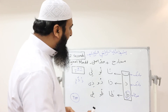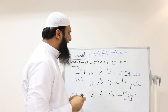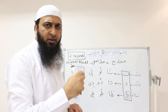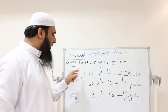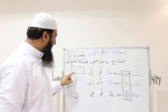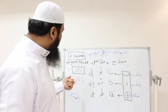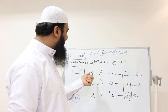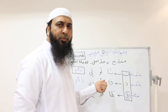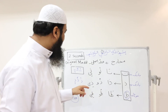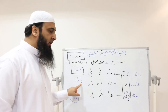Also in the Qur'an, as we can see, sometimes we find a standing fatha, a reverted dhamma, or a sitting kasra. Basically they are equal to the basic mad, which means we prolong them for two seconds.